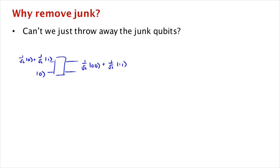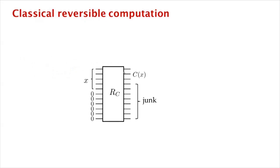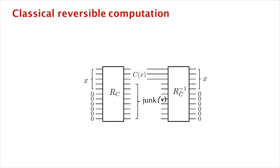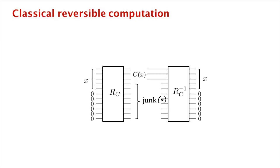What we have to do is somehow change the circuit so that junk qubits are not created. It turns out there's a very elegant way of doing this. Our reversible circuit takes as input x and a bunch of zeros, outputs C(x) — the correct answer — but also outputs junk which may be a function of x. Since it's a reversible circuit, we could apply the reverse of the circuit, which gets rid of the junk and restores all these bits back to zero. But of course there's a problem: it also takes the answer C(x) and restores it to x. So we've thrown out the baby with the bathwater.